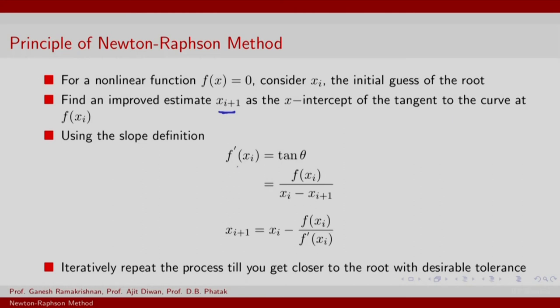The slope f'(x_i), which is tan(theta), is f(x_i) minus 0—the 0 is basically what the x-intercept x_{i+1} has as its y-coordinate.